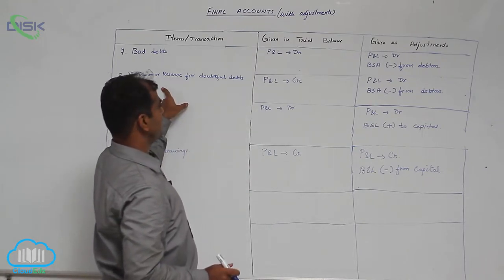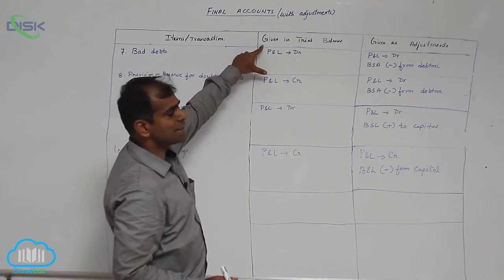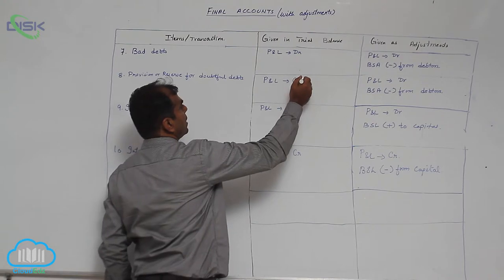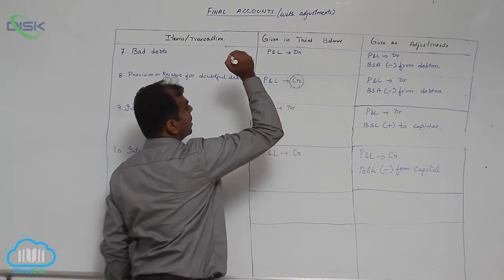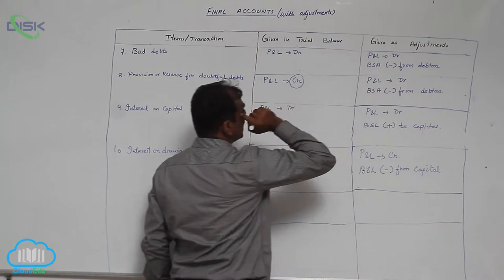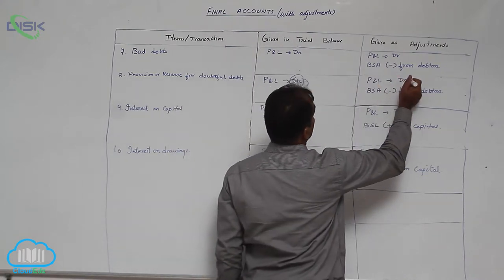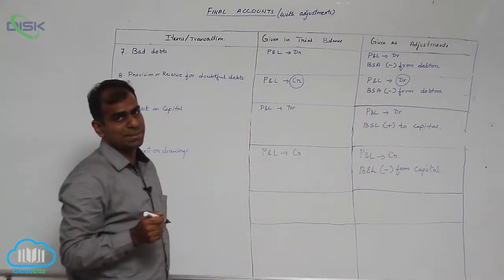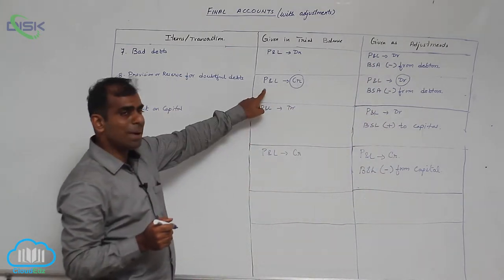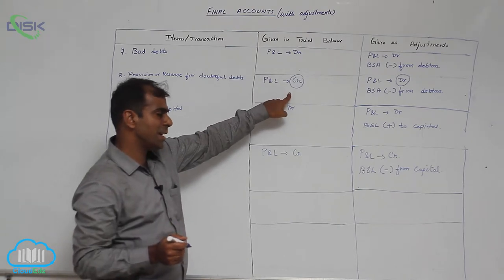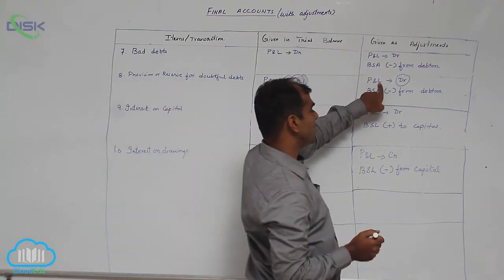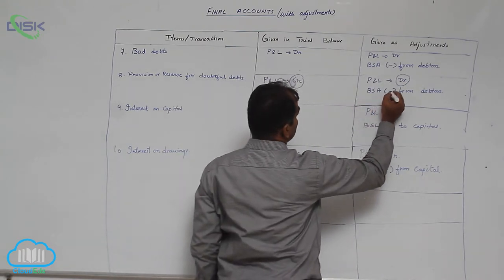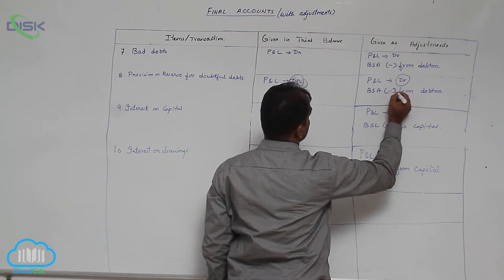For provision for bad and doubtful debts: if it is given in the trial balance, you will take it in the P&L account on the credit side. If it is given in the adjustment, it means you are creating a new provision, so you will take that amount in the P&L account debit side. In the balance sheet, you should minus the provision from debtors — specifically the provision given in the adjustment.